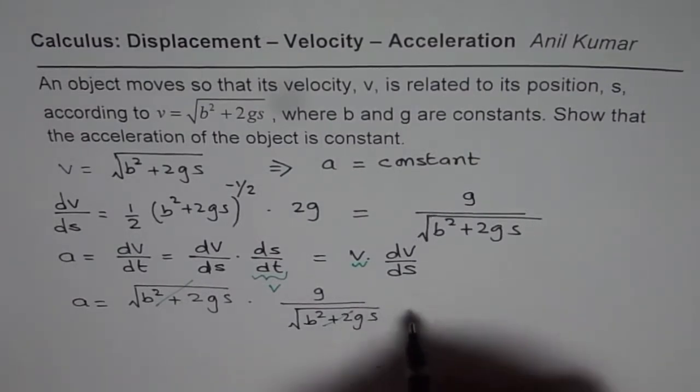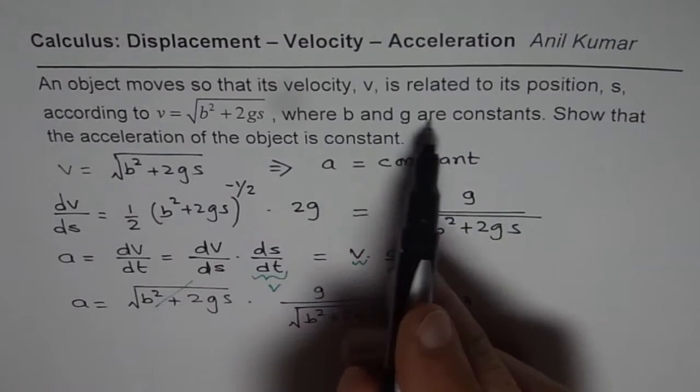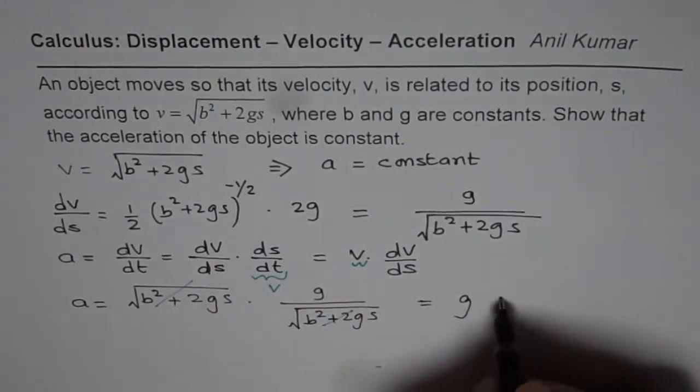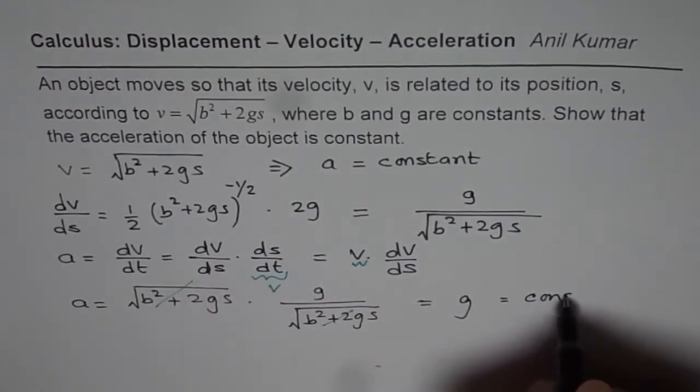You can see very clearly that b² + 2gs cancels out. What are you left with? You are left with g. g is a constant, which is indeed constant.